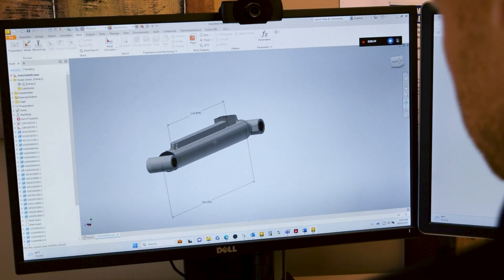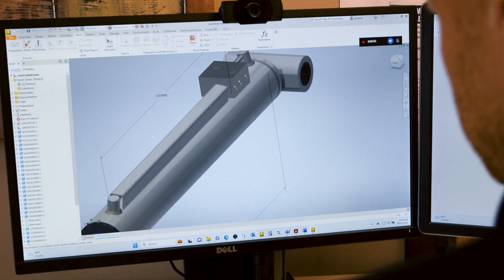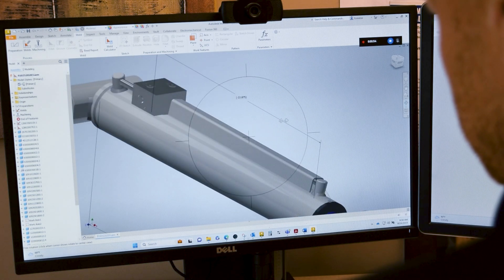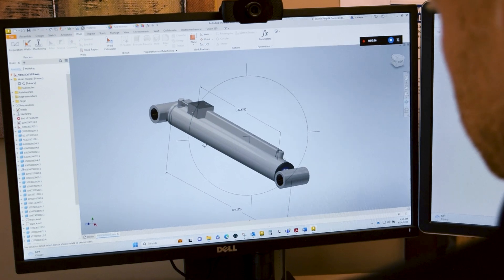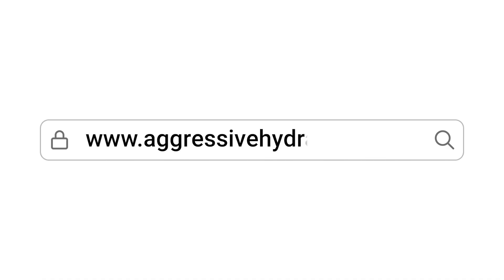The calculator takes the guesswork out of cylinder selection, saving you time and resources while designing your project. To access the Hydraulic Rod Cylinder Calculator, simply visit aggressivehydraulics.com.